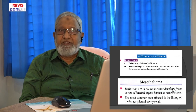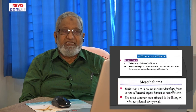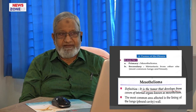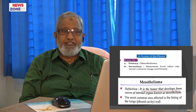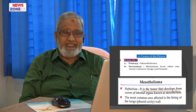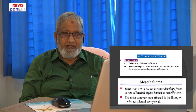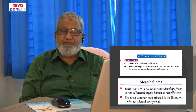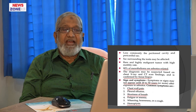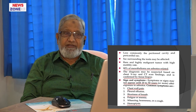Primarily, the tumour of pleura is mesothelioma. Secondary tumour is metastasis from other sites, most commonly the lung and breast. Mesothelioma is a tumour that develops from the covers of internal organs, known as mesothelium. The most common area affected is the lining of the lungs, that is the pleural cavity. 90 percent of mesothelioma is asbestos-related.